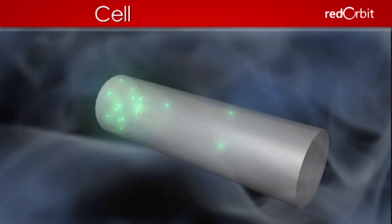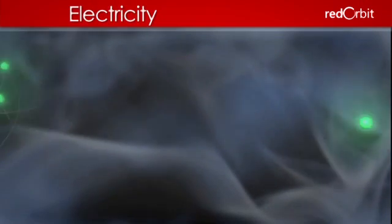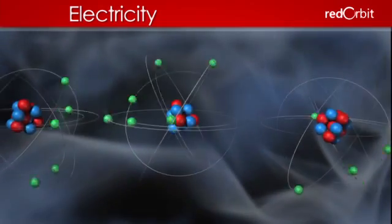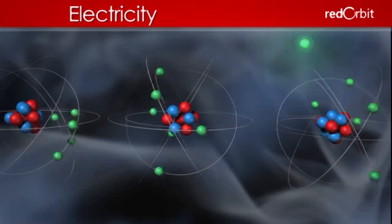particles that have the same charge repel each other, while particles that have opposite charges attract. These negative electrons push each other apart, jumping from atom to atom through the conductor, creating electricity.